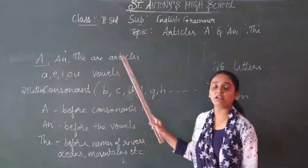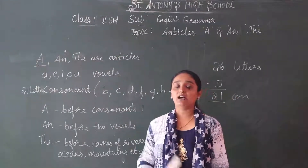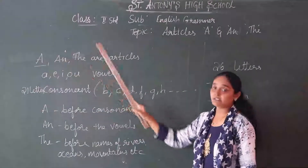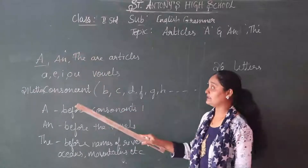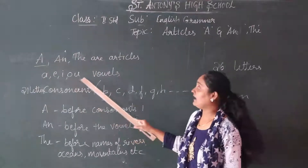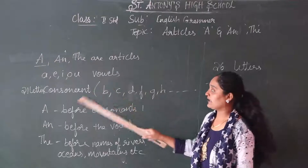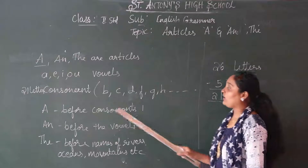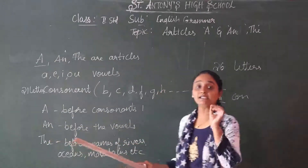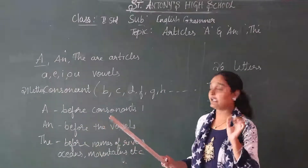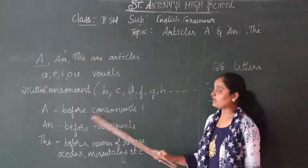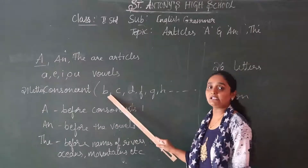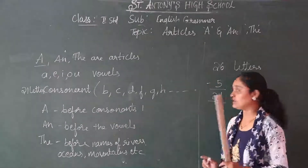Okay children. So what are articles? A and the are articles. So we are going to see how we are using these words. A and the are articles. So how we are using A in a sentence — A is used before the consonants. You have 21 consonants.